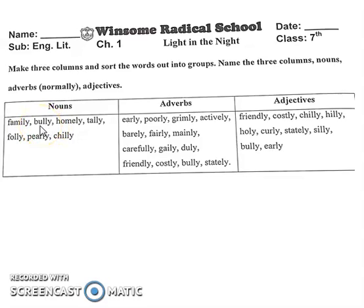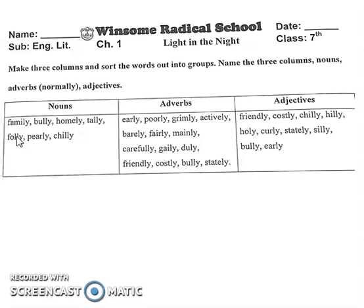Bully — آپ کو پتہ ہے بُلی مطلب کسی کا مذاق اڑانے والے کو یا ٹانگ کھینچنے والے کو کہتے ہیں۔ Homely — homely کا مطلب ہے simple but cozy and comfortable، جیسے کہ کسی کو اپنے گھر جیسی feeling آتی ہو۔ Folly — lack of good sense، یعنی آپ اسے foolishness بھی کہہ سکتے ہیں، بیوقوفی۔